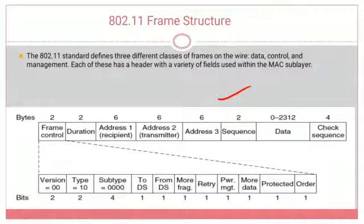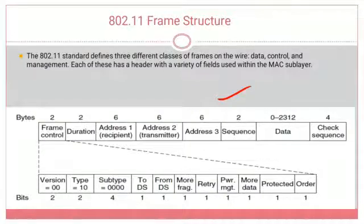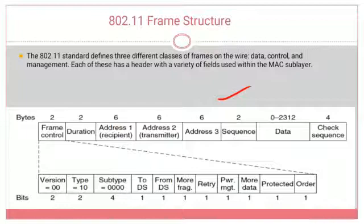The complete 802.11 frame structure is: frame control, duration, address 1, address 2, address 3, sequence, data, and check sequence. The frame control field consists of 2 bytes and contains 11 subfields, each assigned a specified number of bits. The 11 subfields are: version, type, subtype, ToDS, FromDS, more fragment, retry, power management, more data, protected, and order.